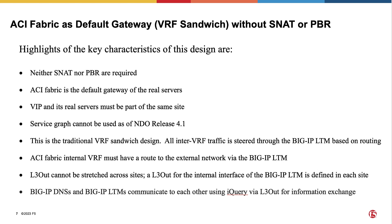Here are some highlights of this design option: neither SNAT nor PBR are required; ACI-Fabric is the default gateway of the real servers; the VIP and its real servers must be part of the same site. This is the traditional VRF sandwich design with two VRFs — one for internal and one for external. All inter-VRF traffic is steered through the BigIP-LTM based on routing, and the ACI-Fabric internal VRF must have a route to the external network via the BigIP-LTM.